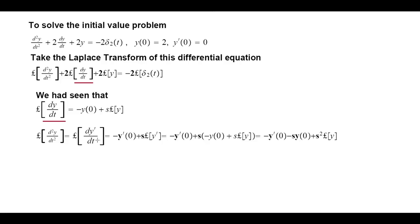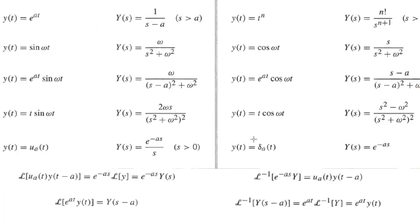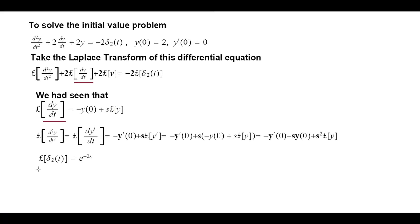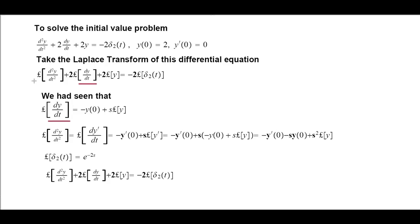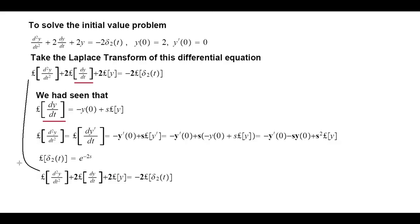And for δ(2t), remember this: for δ(at), we have already derived that the Laplace transform is e^(-as). So the Laplace transform of δ(2t) is e^(-2s). Now we will go ahead and substitute all these values that we obtained in this equation that was obtained by taking the Laplace transform.